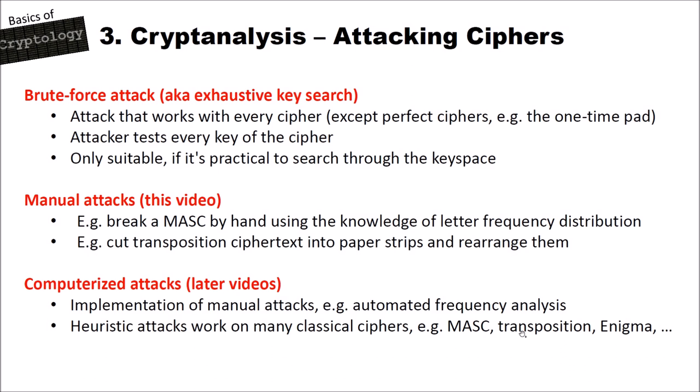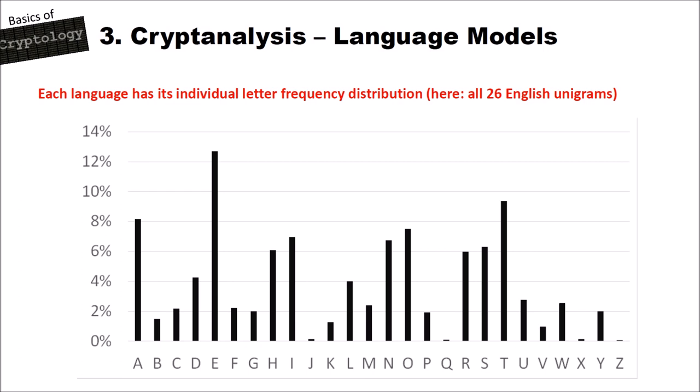Now let's speak about language models and letter frequency distributions. With cryptanalysis, we use the fact that the letter distribution in different languages is nearly always the same. For instance, here are all 26 English unigrams — A through Z — and their distribution in the language. As we can see, E is the most frequent letter, then T, then A, and then there are letters that are very infrequent, like J, Q, X, and Z. Depending on the cipher, we can make use of this letter distribution.